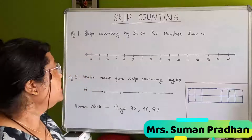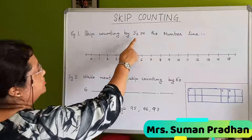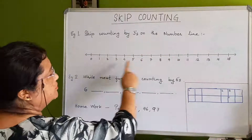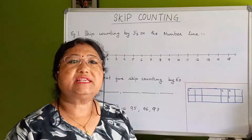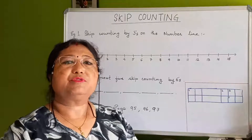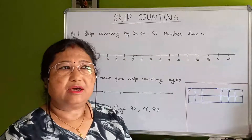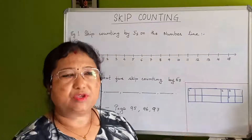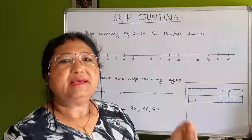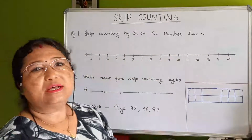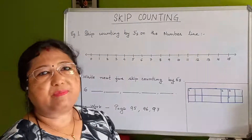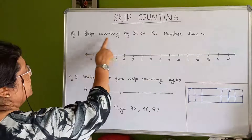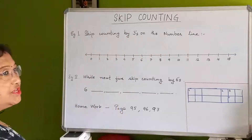Now, let's look at skip counting by three on the number line. What is skip counting? Skip counting means you have to jump numbers. Just like you know how to play skip by jumping, you jump and play — like that, on the number line, by jumping you write the number. So by threes means you have to jump three times each time.